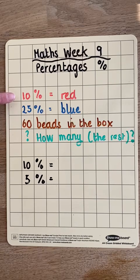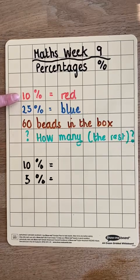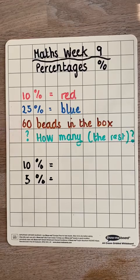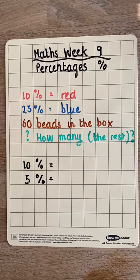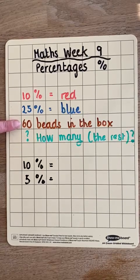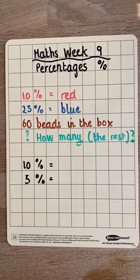First we need to find the value of the percentages we have, using the percentage number and the total number of beads, and there are two ways we could do this. We could find 1% and then multiply it by 10 or by 25, or we could find 10% directly, which we need to find anyway. To find 10% of an amount — in this case 60 — we divide by 10. So let's find that first.